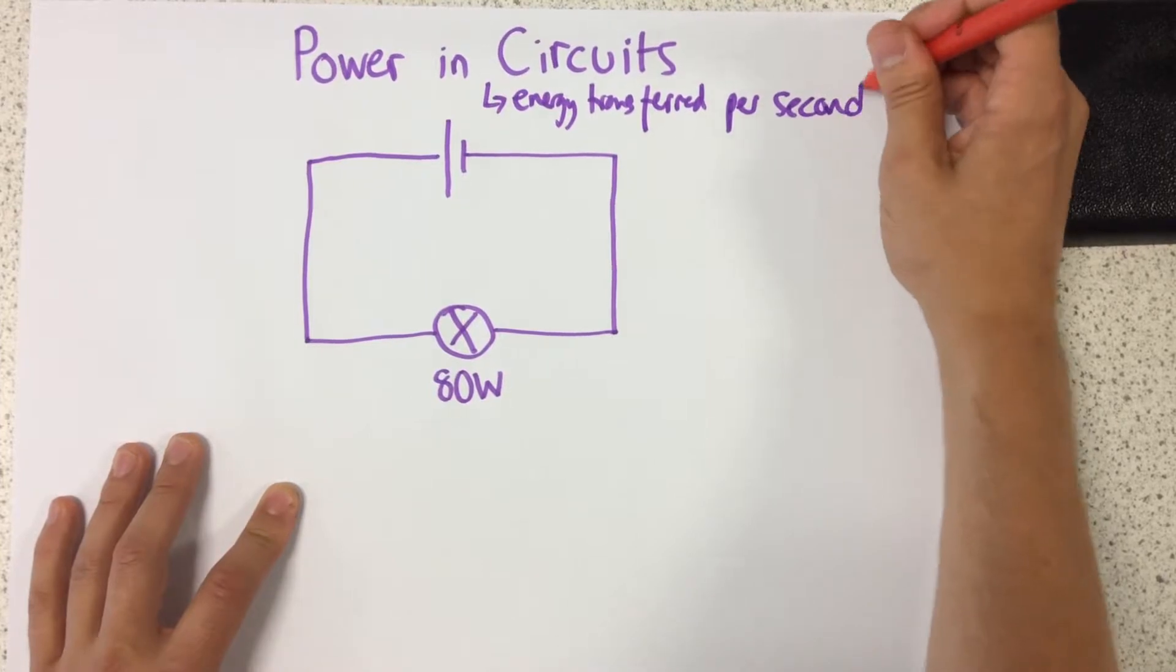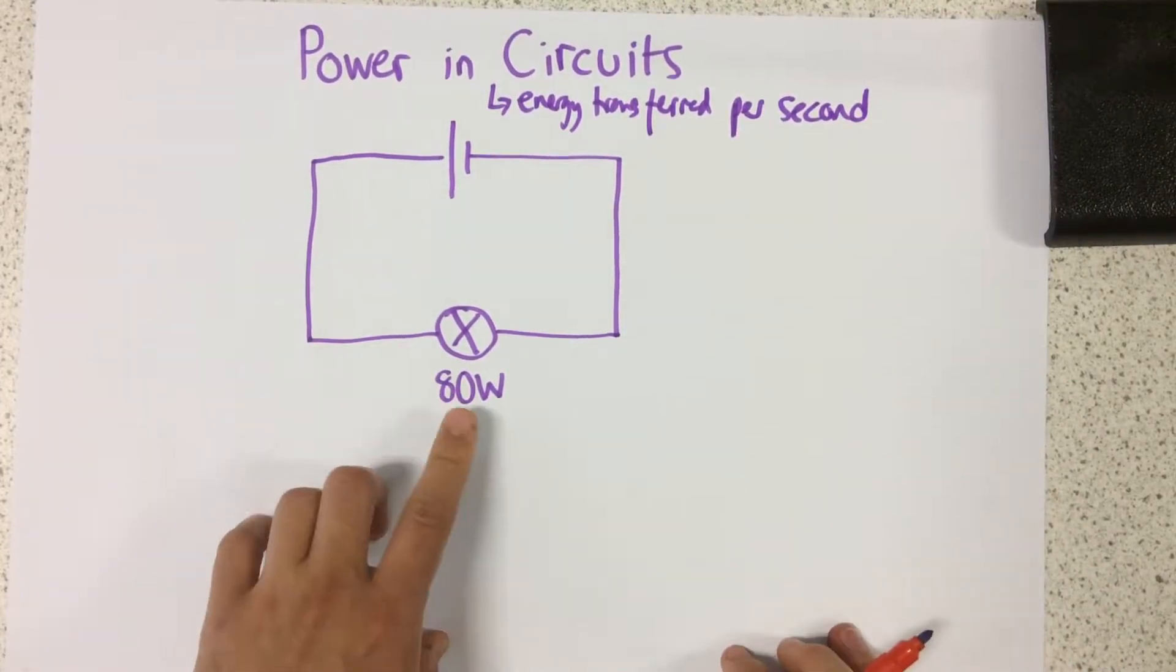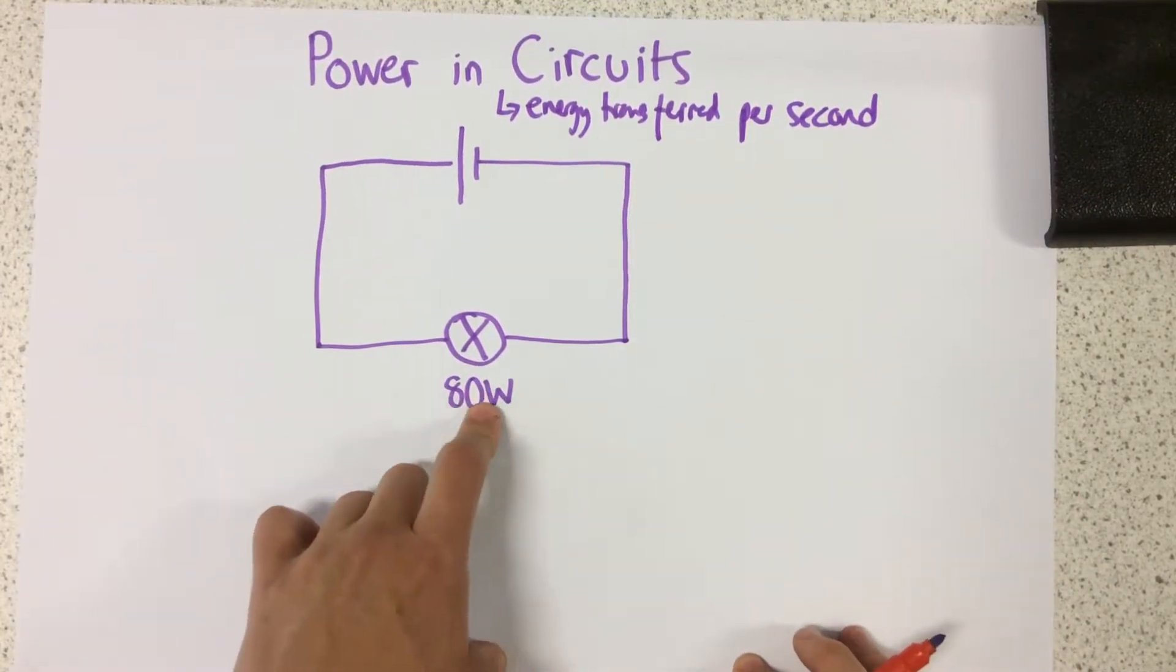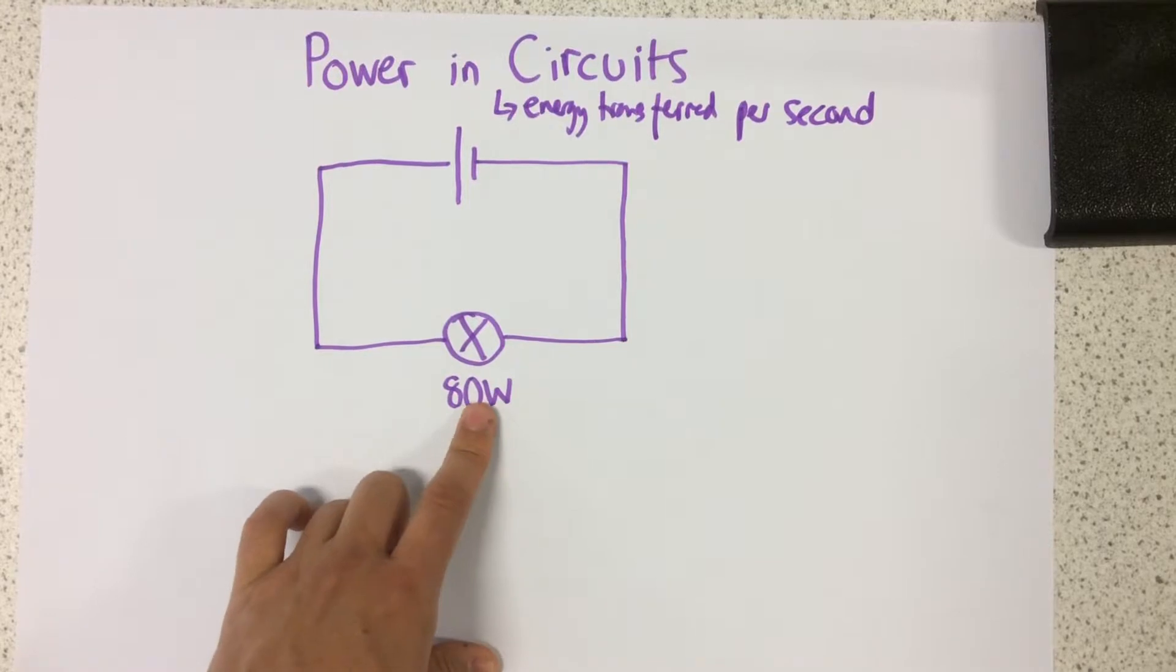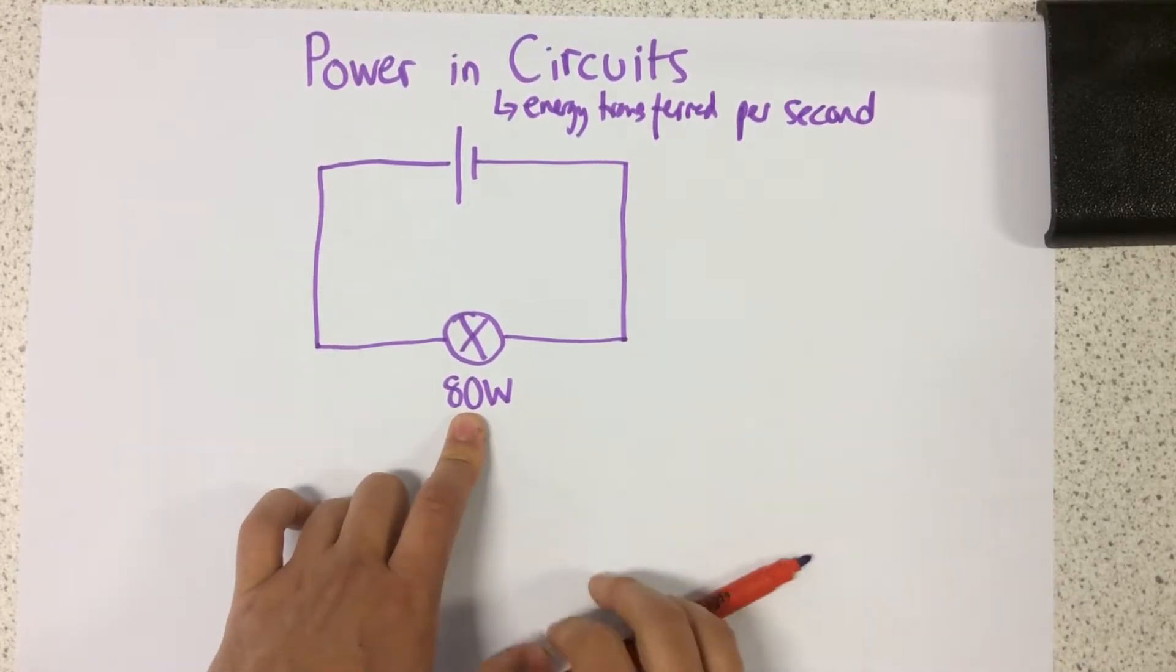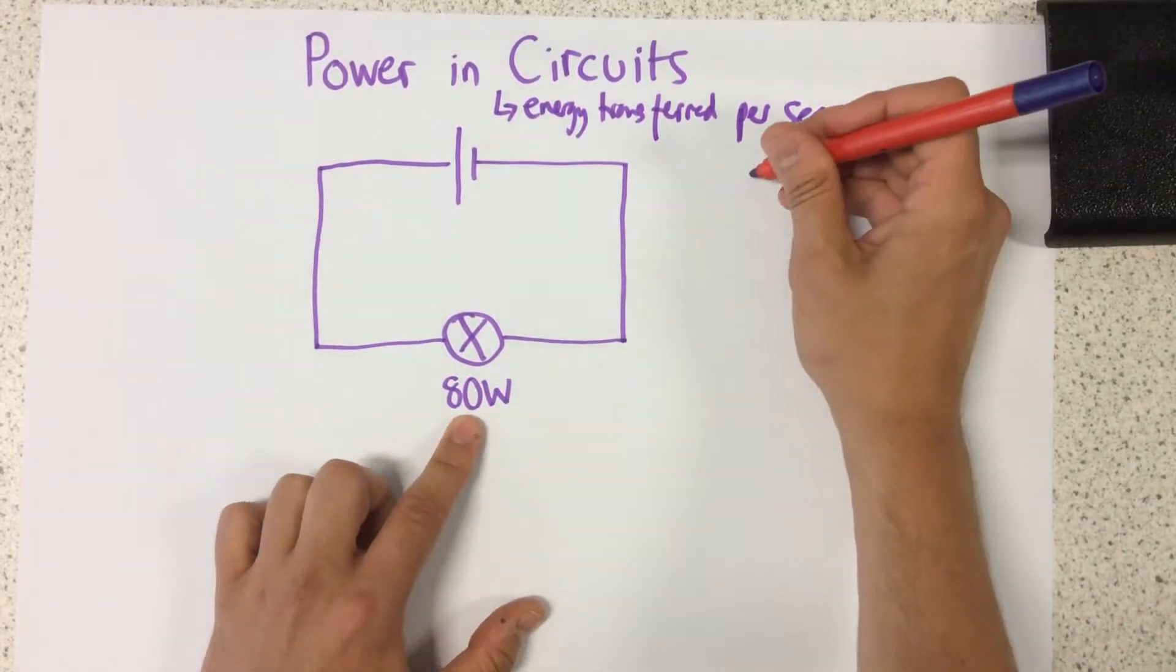So it means every single second how much energy is being transferred, for example, by this component. So for this component here, this filament lamp, every single second it's transferring 80 joules of energy.